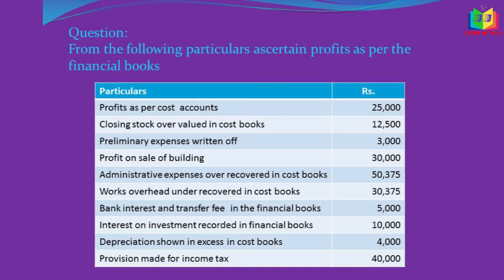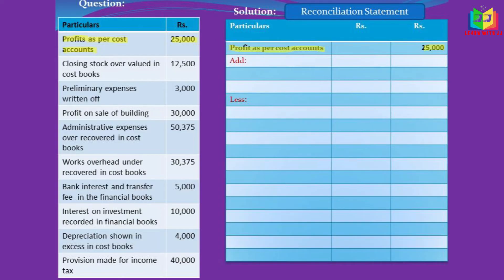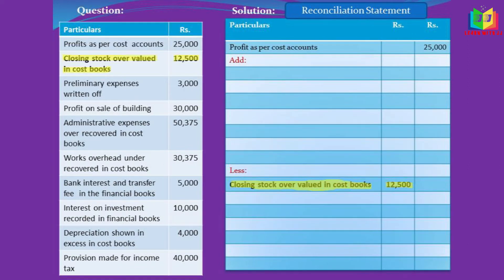In this problem, profit as per cost book was given, so we have to find out the profit as per the financial book. The first step is to fix the base — here our base is cost accounts, so we have to think from the angle of the cost book. I'll write profit as per cost account: 25,000.